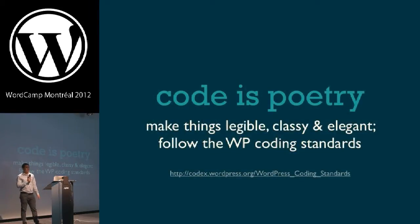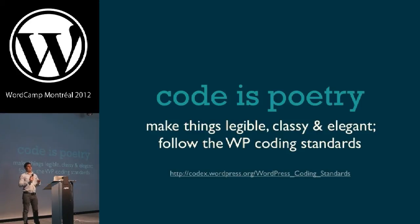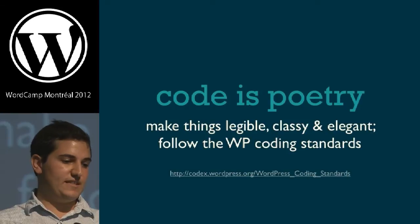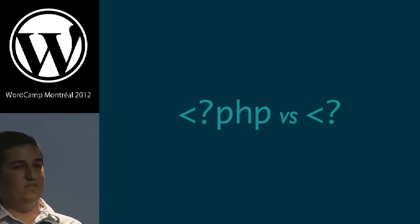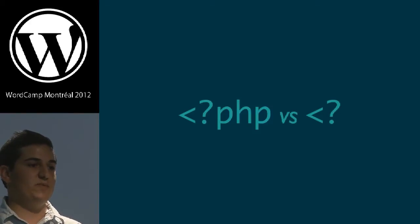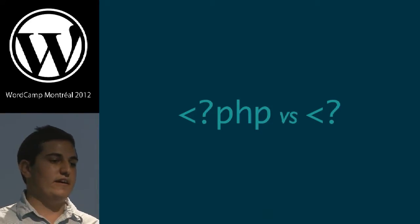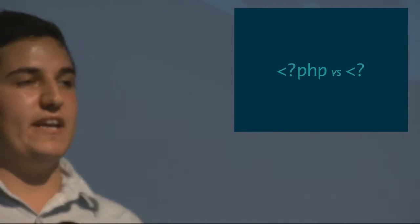"Code is poetry" — that's one of the main sayings within the WordPress development world. It means you have to make things legible, classy, and elegant. To do that, you should follow the WordPress coding standards. The first one is using the long-form PHP opening bracket rather than the short form, which doesn't work on all hosts. If you're writing any code that might be redistributed through a plugin or theme, the safer option is always the longer form — that's the standard adapted within core and plugin developers as well.